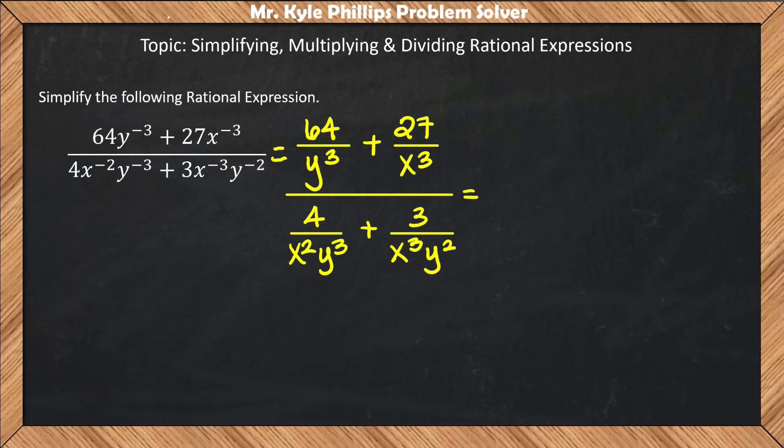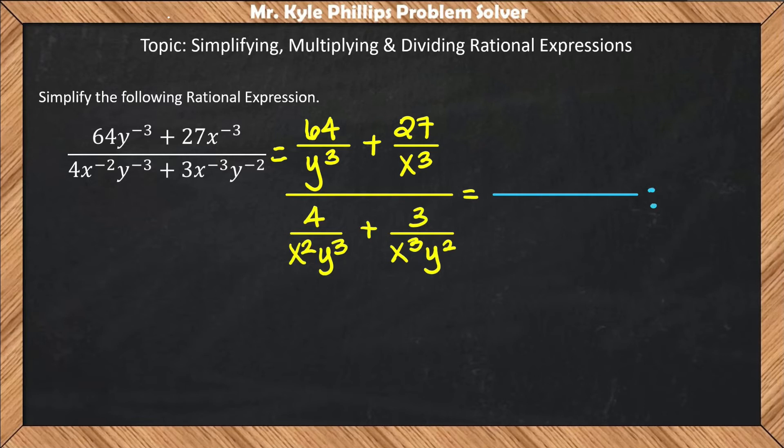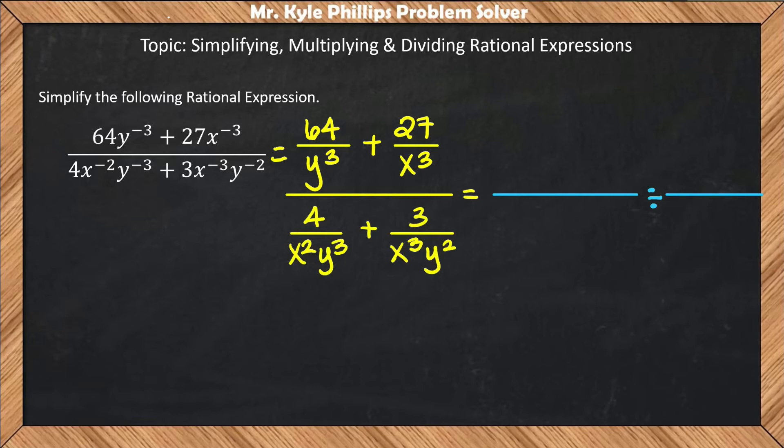So here I have unlike denominators and I'm adding. In order to add, I'll need common denominators. What I'll do is say the numerator is going to be divided by my denominator.